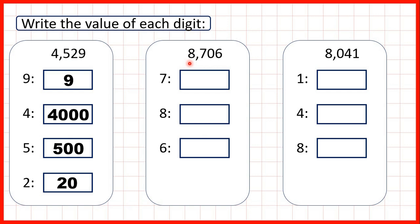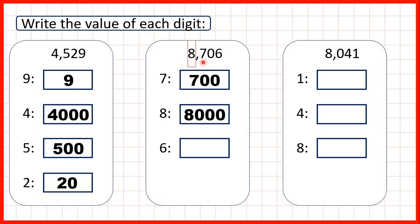Now we have the number 8706. The 7 is in our hundreds place value, so that represents 700. That's 7 followed by 2 zeros, because notice in our number, after the 7, we have 2 digits. The 8 is in our thousands place, so that represents 8000. That's 8 followed by 3 zeros, because in our number, after the 8, we have 3 digits.